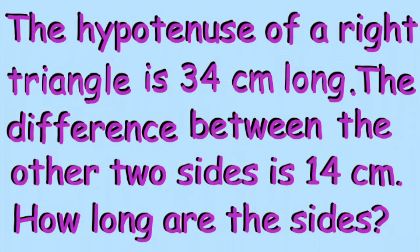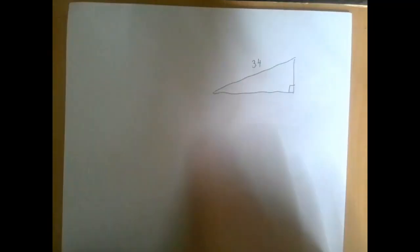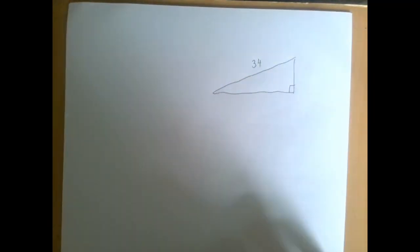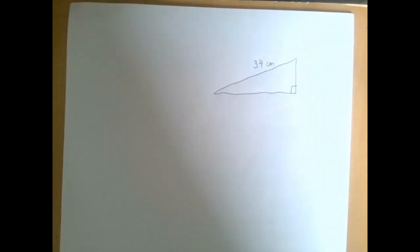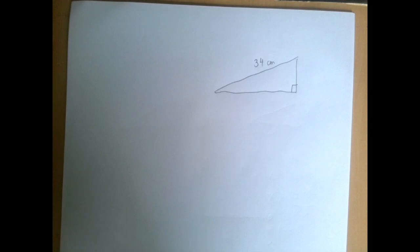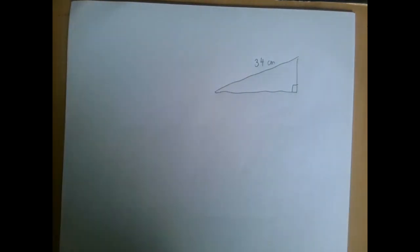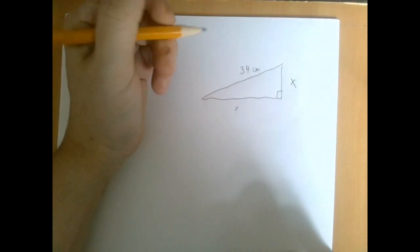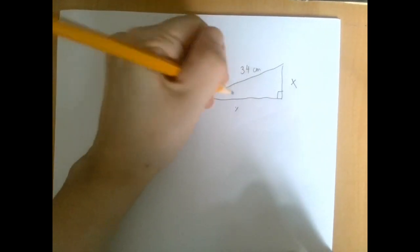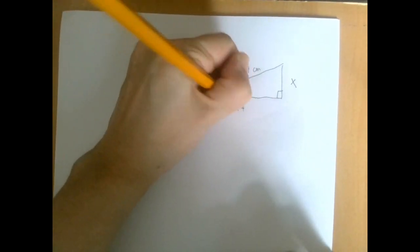We have a right triangle where the hypotenuse is 34 centimeters long, and the difference between the other two sides is 14 centimeters. So none of the sides is 14, probably, but if this shorter one is x, then the longer one is x plus 14.